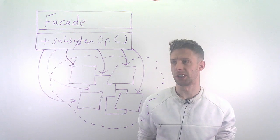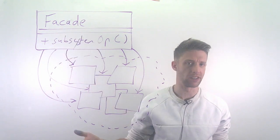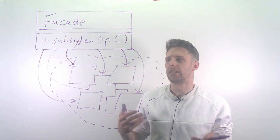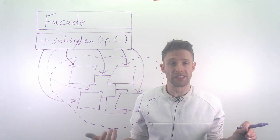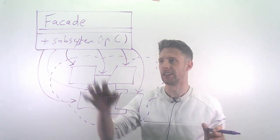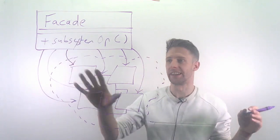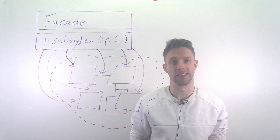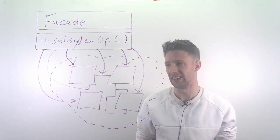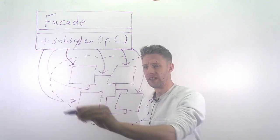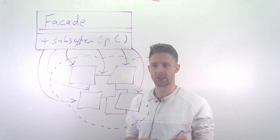Next up in the structural patterns is the facade pattern. As you know from the word facade, from a building facade, the idea is that it's some kind of pretty thing on the outside that hides whatever mess is behind there. That's really the idea: you have some subsystem or system that has very complicated interactions.